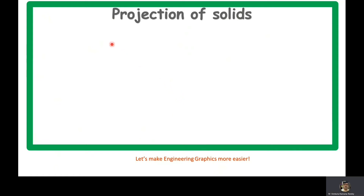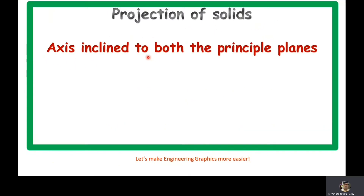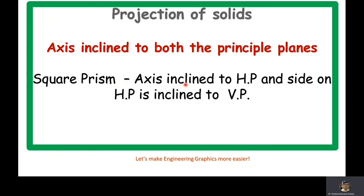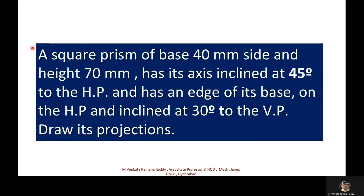Good morning, dear students. Welcome to the discussion on the topic projection of solids. Under this, we are discussing the concept of solids with axis inclined to both the principal planes. We are solving a problem on a square prism with axis inclined to HP and a side on HP inclined to VP. The given problem: a square prism of base 40 mm side and height 70 mm has its axis inclined at 45 degrees to the HP, with an edge of its base on the HP and inclined at 30 degrees to the VP. Draw its projections.